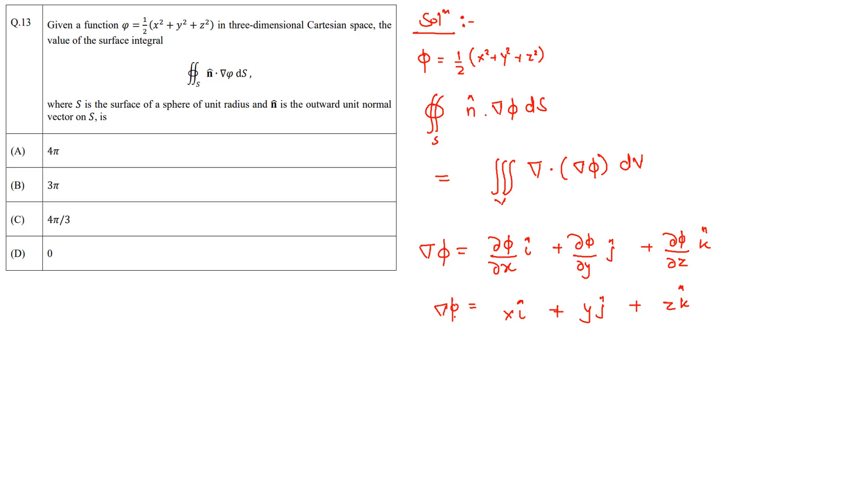Now this is the gradient of φ. Now calculating the divergence of this quantity, that will be del dot grad φ, which will simply be equal to ∂/∂x î plus ∂/∂y ĵ plus ∂/∂z k̂ dot (x î plus y ĵ plus z k̂). Now this will simply be equal to 1 plus 1 plus 1, which is 3.